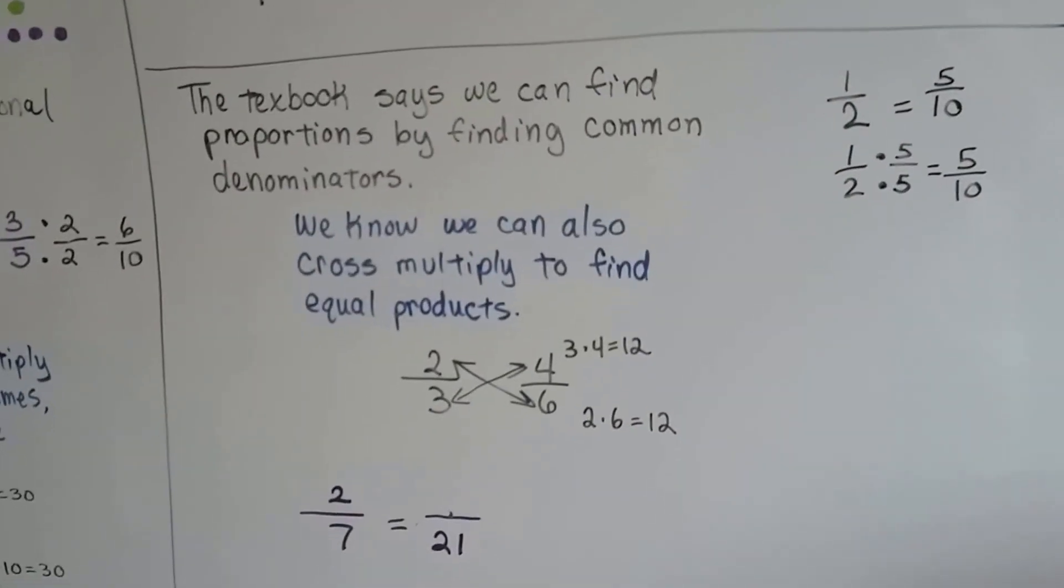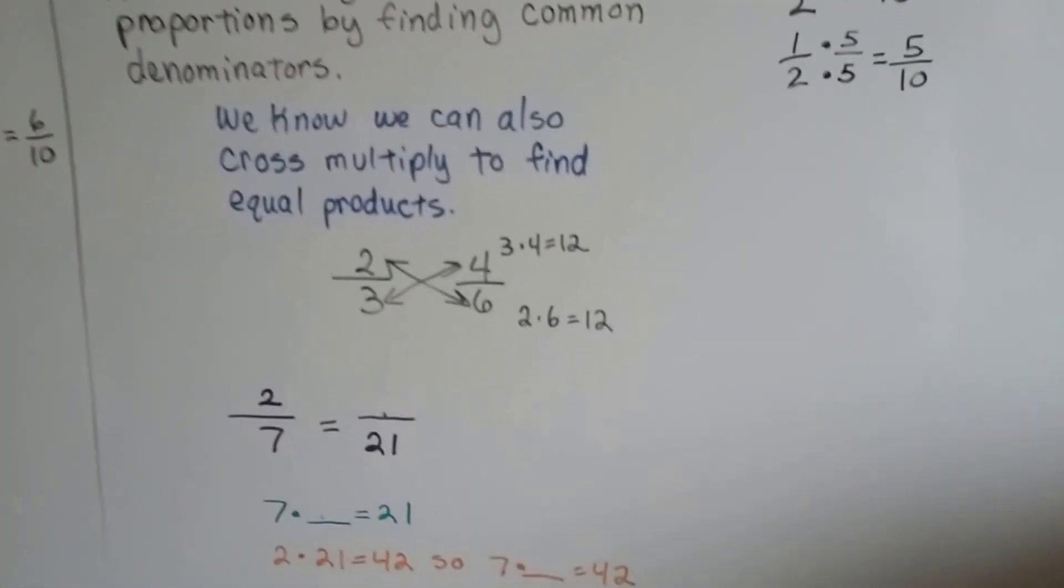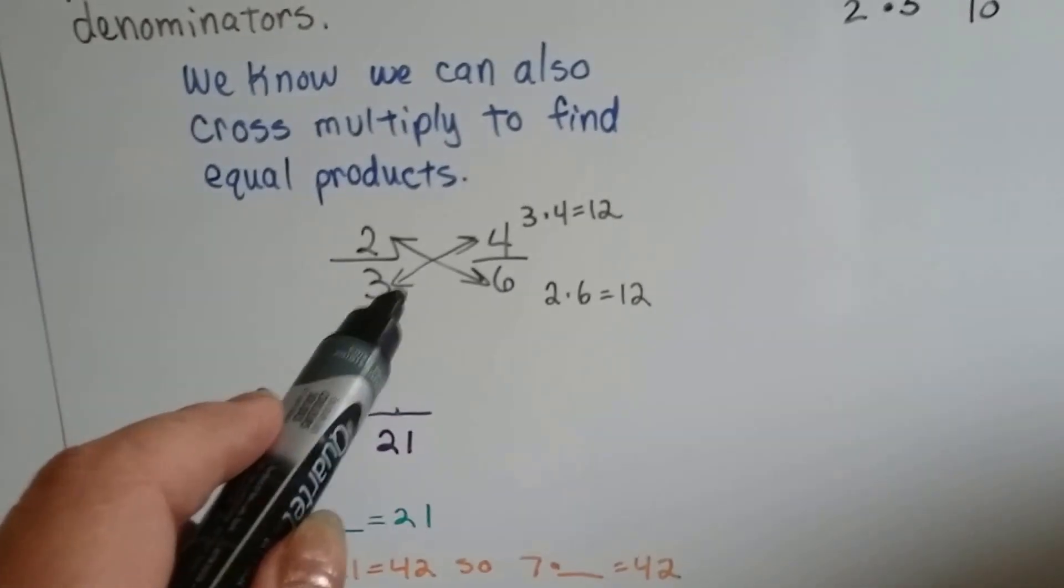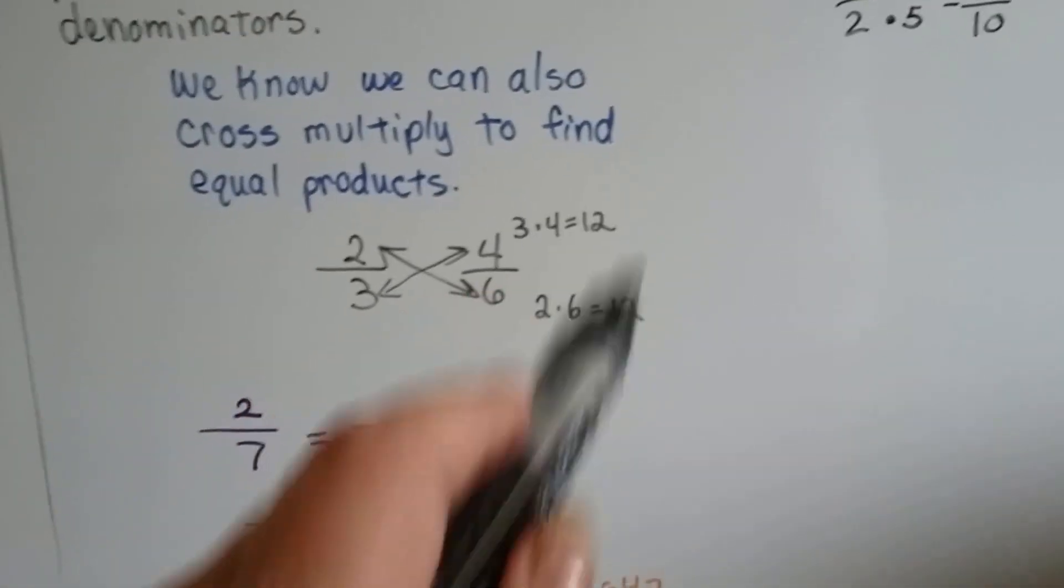But we also know we can use this method. We can cross-multiply to find equal products with the extremes and the means. Two times six is twelve, and three times four is twelve.